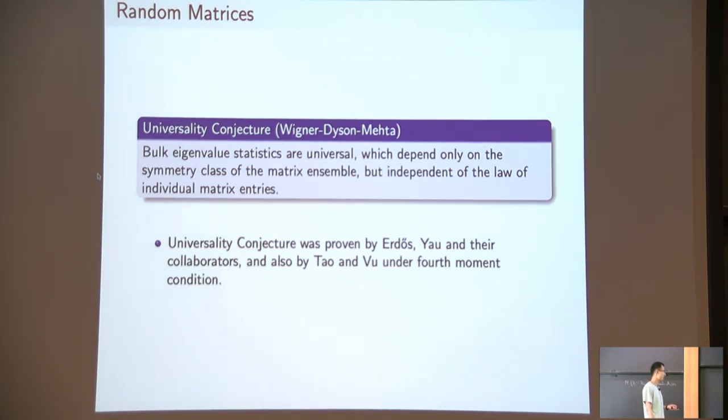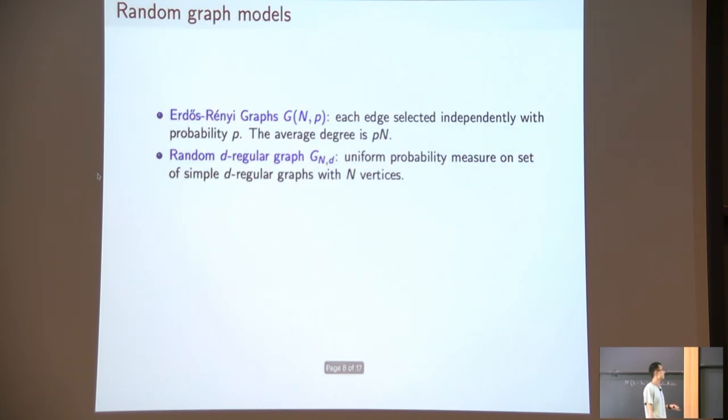Some of my works generalize this universality conjecture to some sparse random matrices. The models I considered are random graph models, and there are two models which are most studied. One is the Erdős-Rényi graph, another is a random d-regular graph. For Erdős-Rényi graph, we denote it by G(n,p), a random graph with n vertices, and each edge is picked independently with probability p. In this way, averagely, each vertex has degree p times n. The random d-regular graph model is just a uniform measure on the set of d-regular graphs on n vertices.